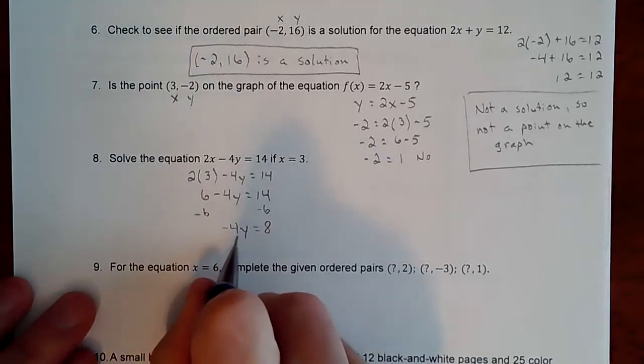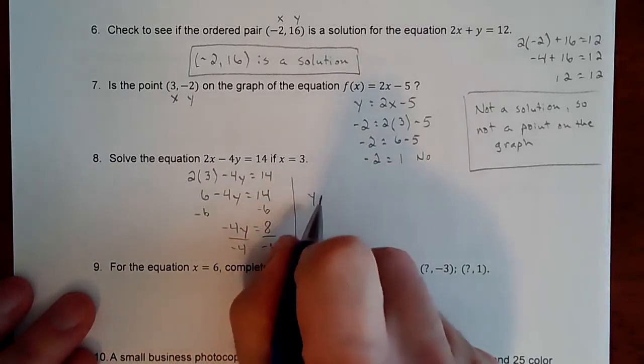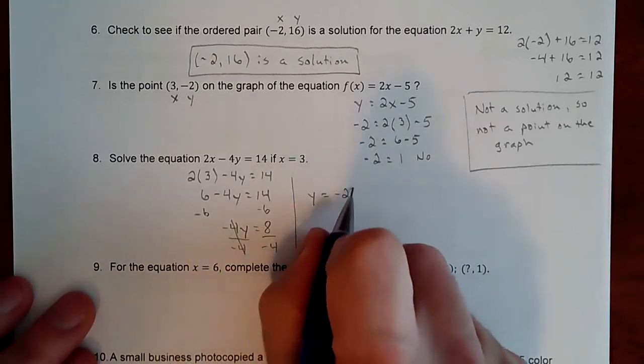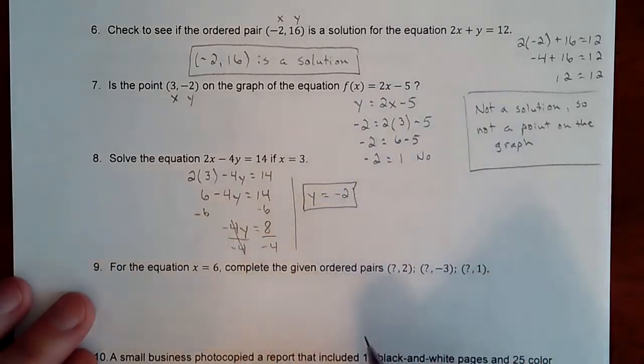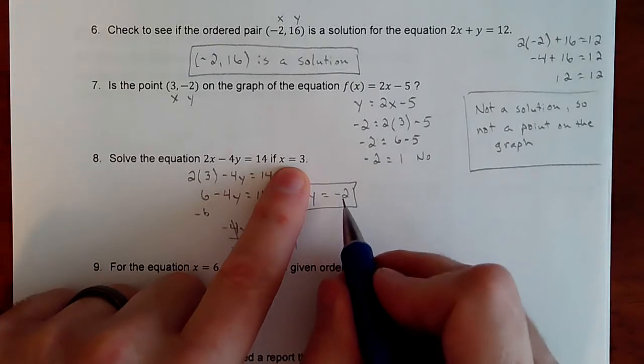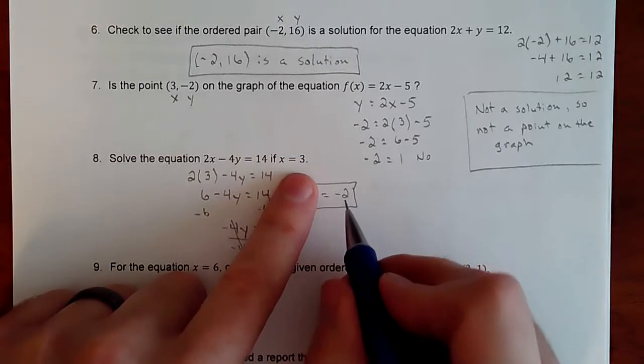And then, so we combined our like terms. Last thing is to divide. So y would equal 8 divided by negative 4, because these two would cancel. Negative 2. Okay. So now it's a solution. So that 3 and then negative 2 could be a coordinate if they were asking for it, or it's a point on the graph as well. But 3 goes with negative 2.